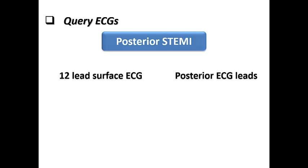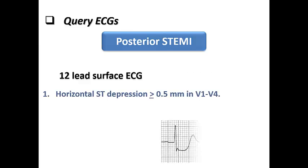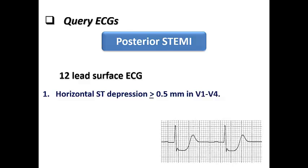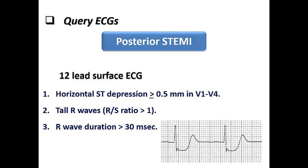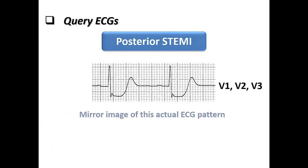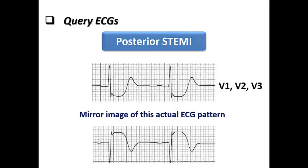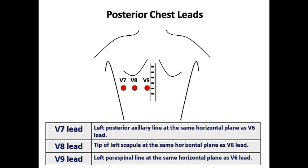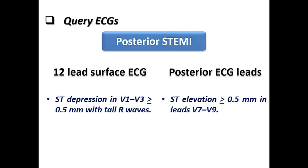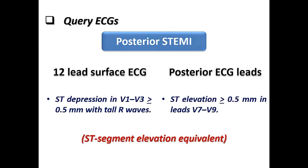Moving to posterior STEMI: to diagnose it using 12-lead surface ECG, we look for horizontal ST depression ≥0.5 mm in V1 to V4, plus a tall R wave with R/S ratio more than 1, R wave duration more than 30 ms, and upright T waves. This is the mirror image of the actual ECG pattern if leads were placed on the posterior chest wall. Placing leads V7, V8, V9 in the anatomical posterior position would show the actual ST elevation pattern of posterior STEMI. ST depression in V1–V3 of ≥0.5 mm with tall R wave, confirmed by ST elevation ≥0.5 mm in leads V7, V8, V9 — this is a STEMI equivalent.